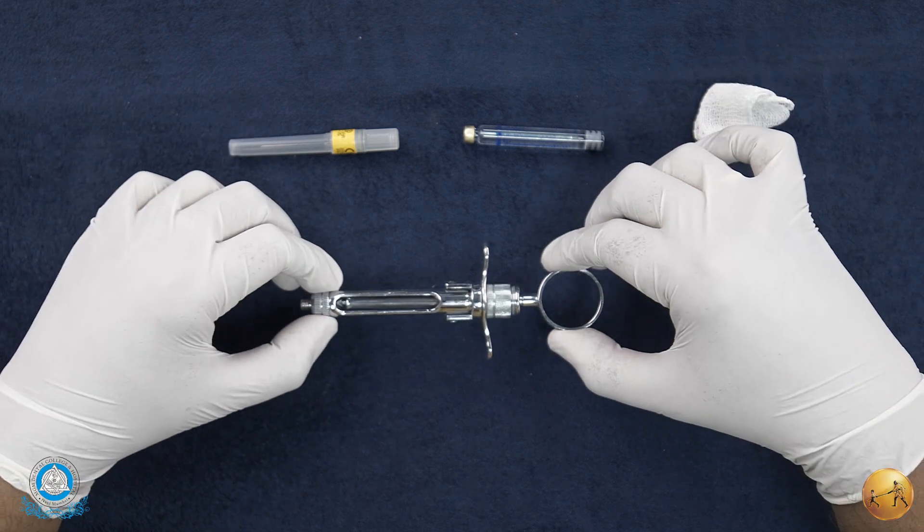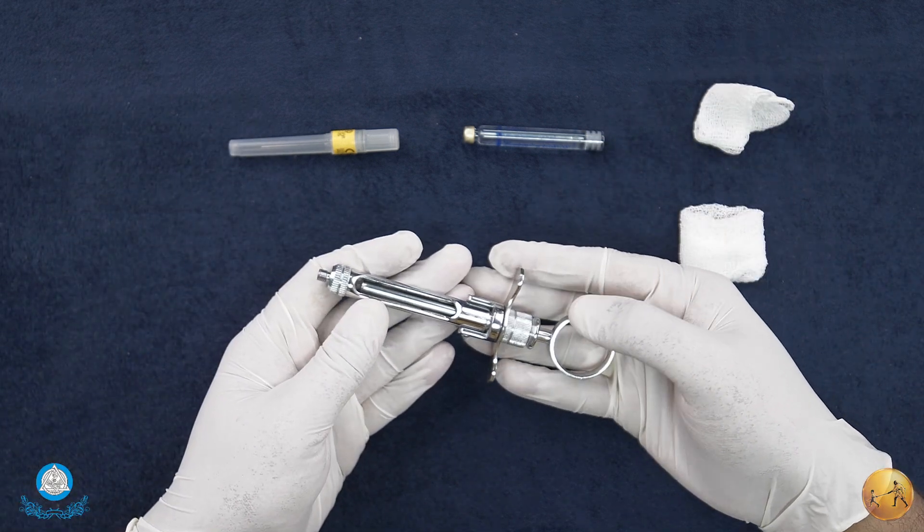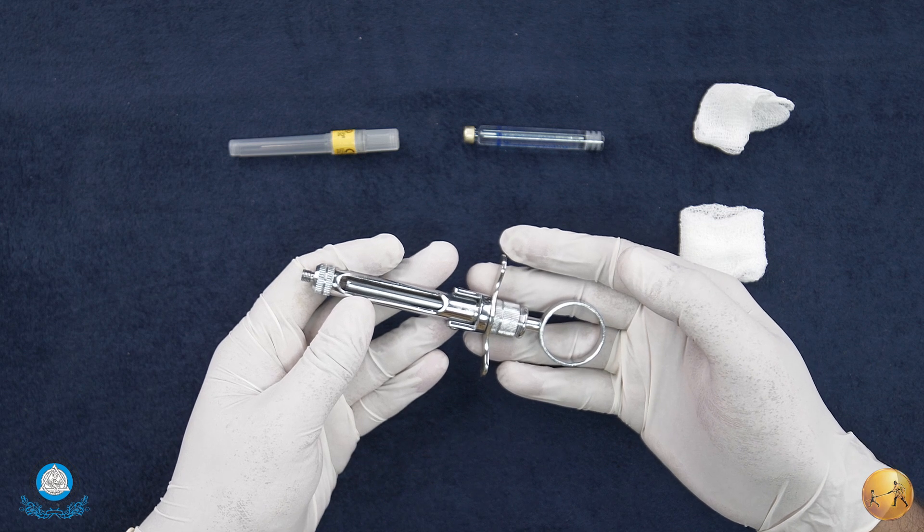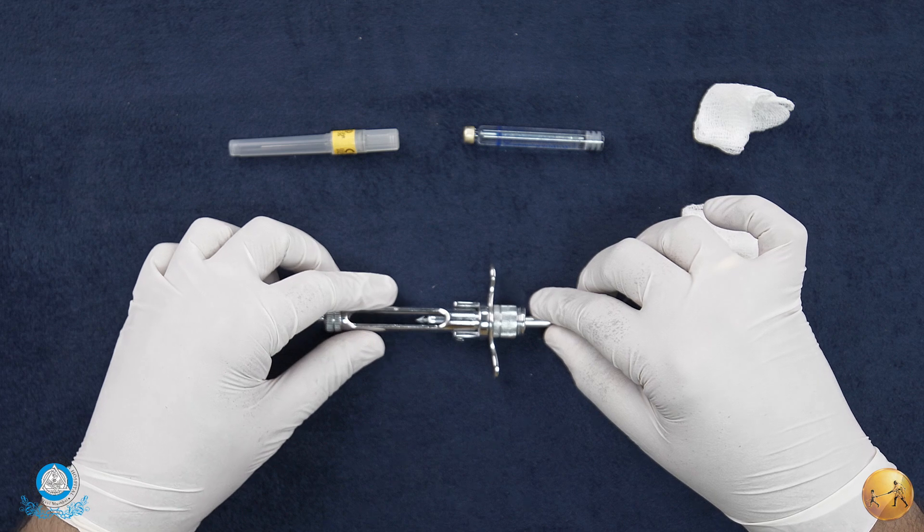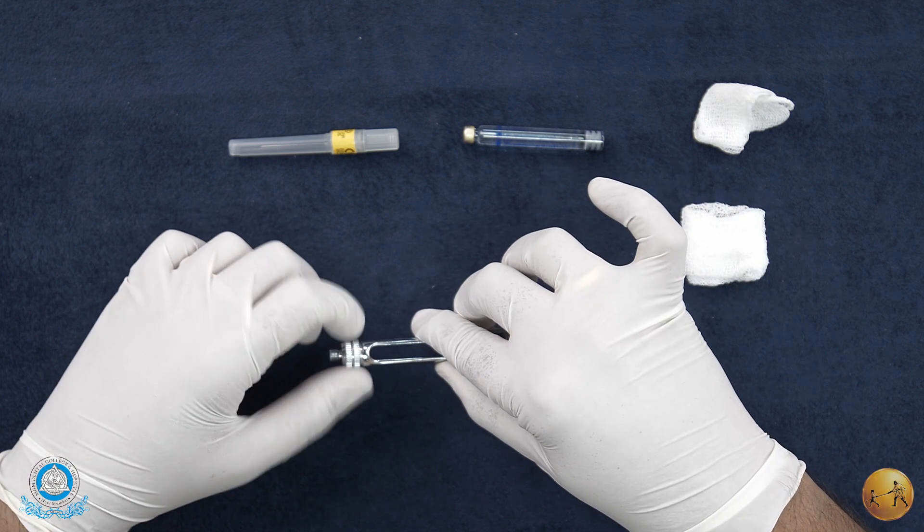To start with, we'll first talk about the actual syringe. This is what the syringe looks like - this is a fully sterilizable unit. Now let's quickly talk about the parts of a syringe. I'll just disassemble this once.